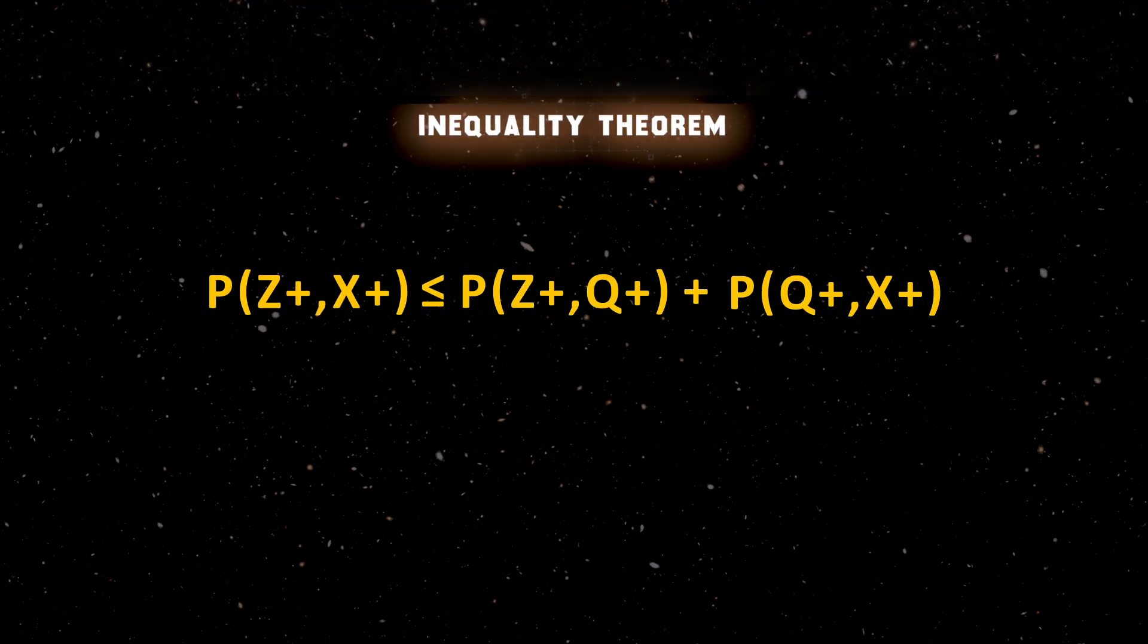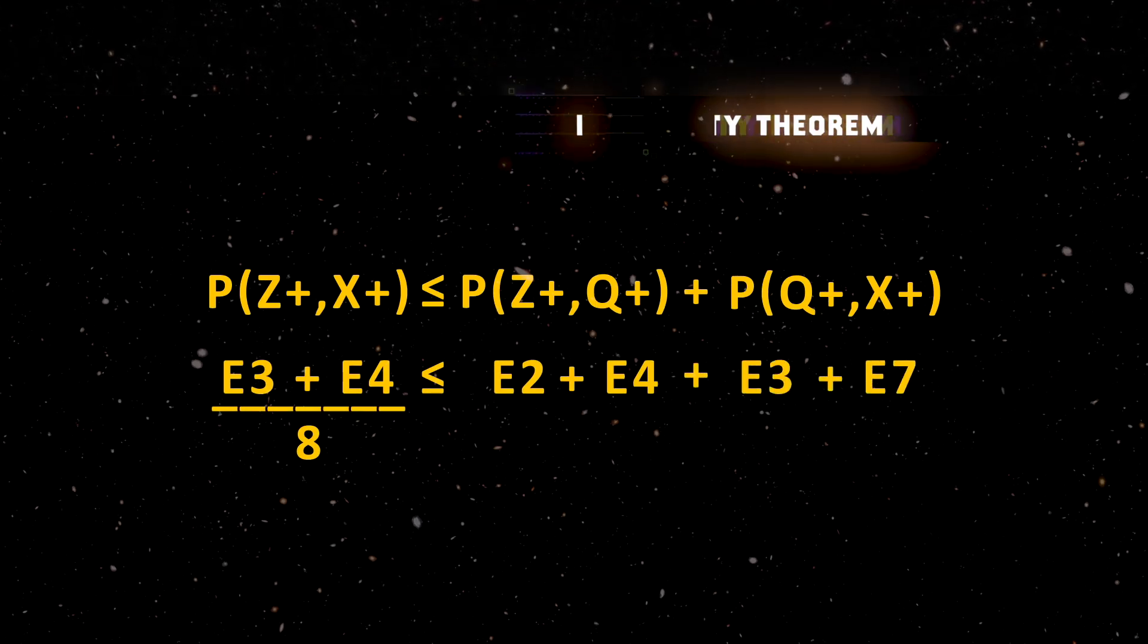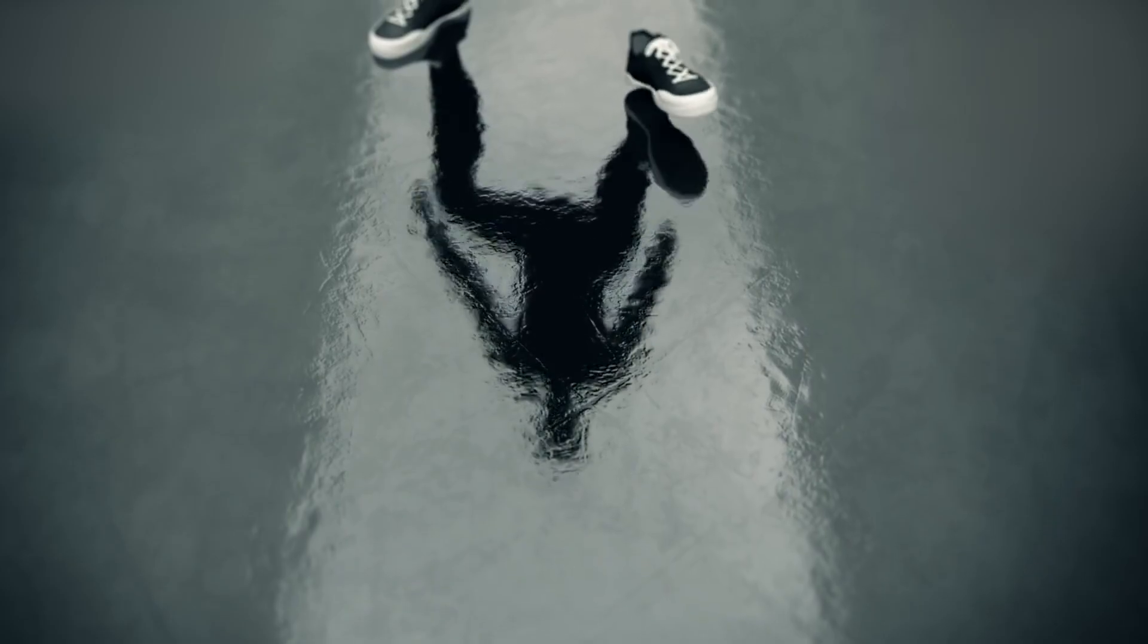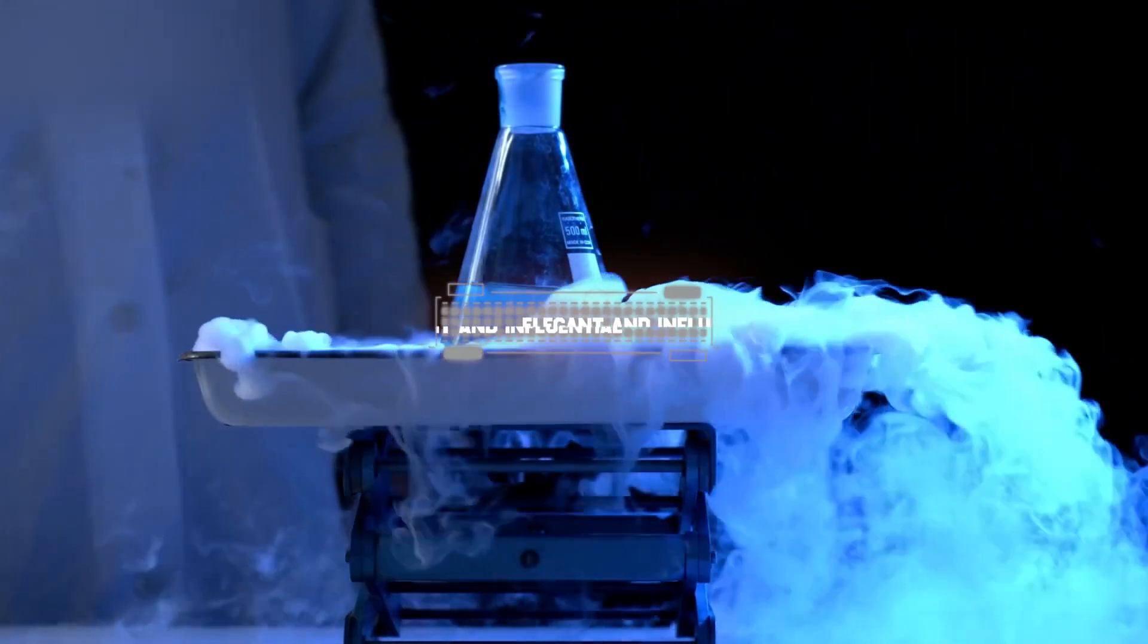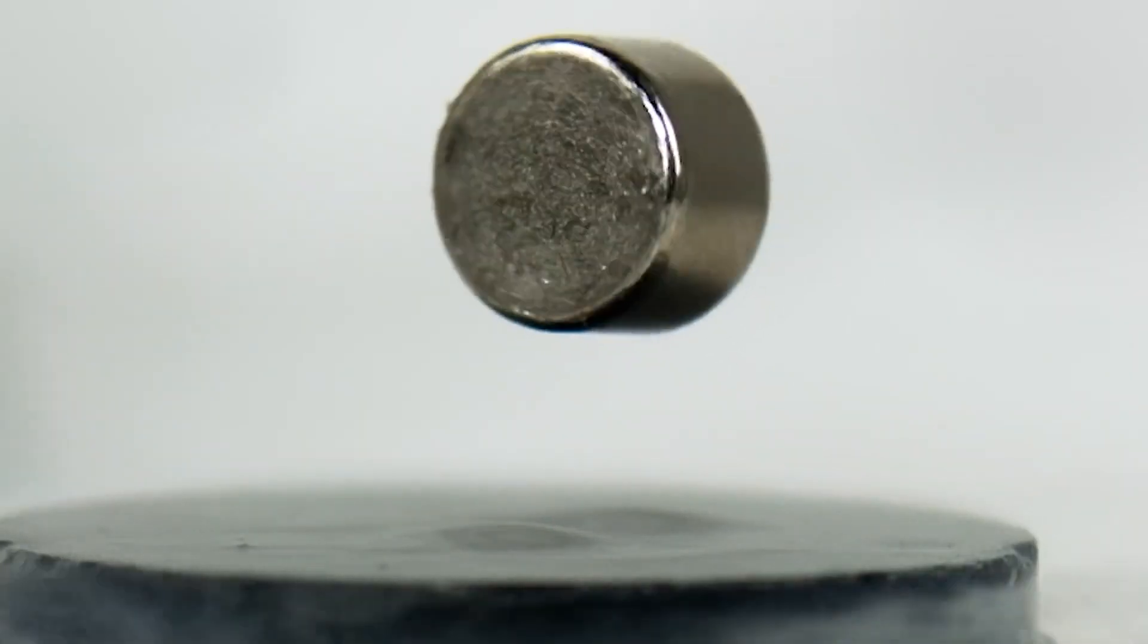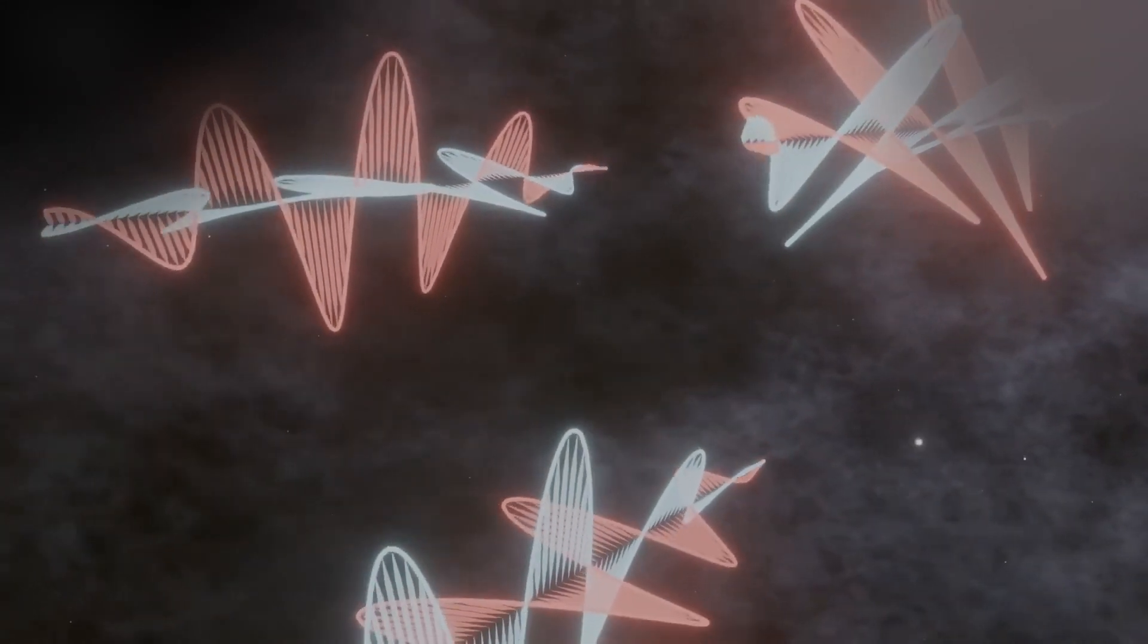which was a carefully formulated inequality that could be experimentally tested to prove if the quantum world acts locally or non-locally. Bell's Inequality Theorem is elegant and influential enough to the scientific world as a whole to have its own video, so now we'll jump to the early 1970s, when the first experiment was designed to test this theory and prove the reality of quantum entanglement.